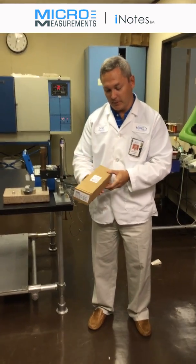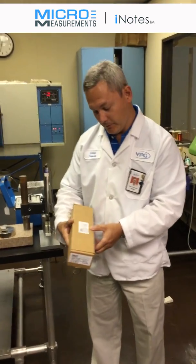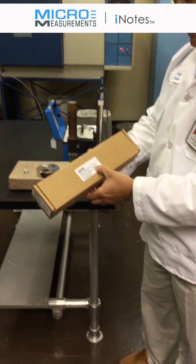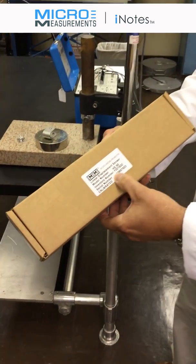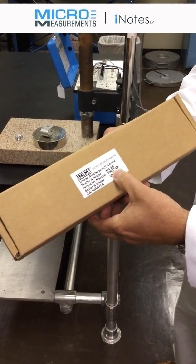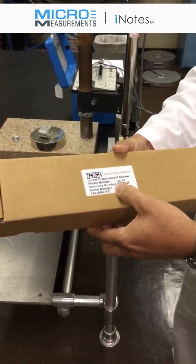Come on over and take a look at how they're packaged. If you look on the cover, you'll see the model number, which is an HS50. It also has an inventory number and a serial number so that we can trace the calibration for this device.